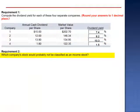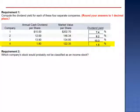Which company stock would probably not be classified as an income stock? The answer is probably Company 4, as it has such a low dividend yield percentage. We'll see you in the next video. Bye.